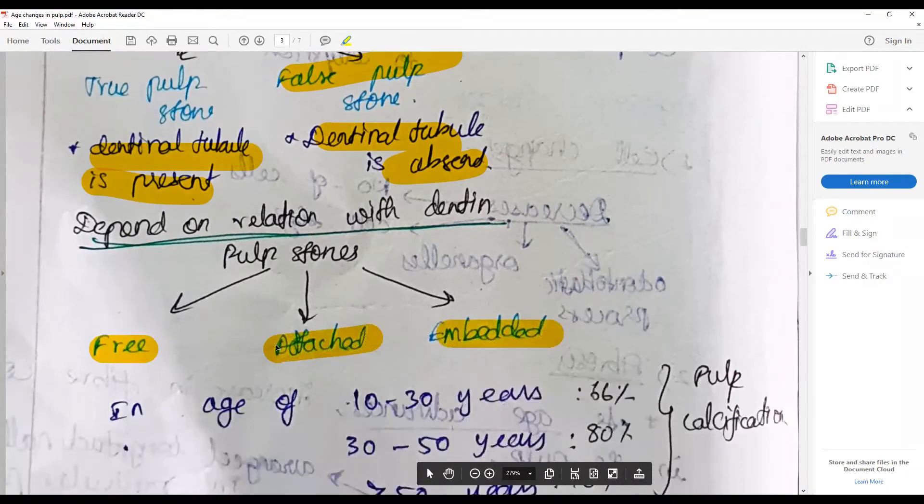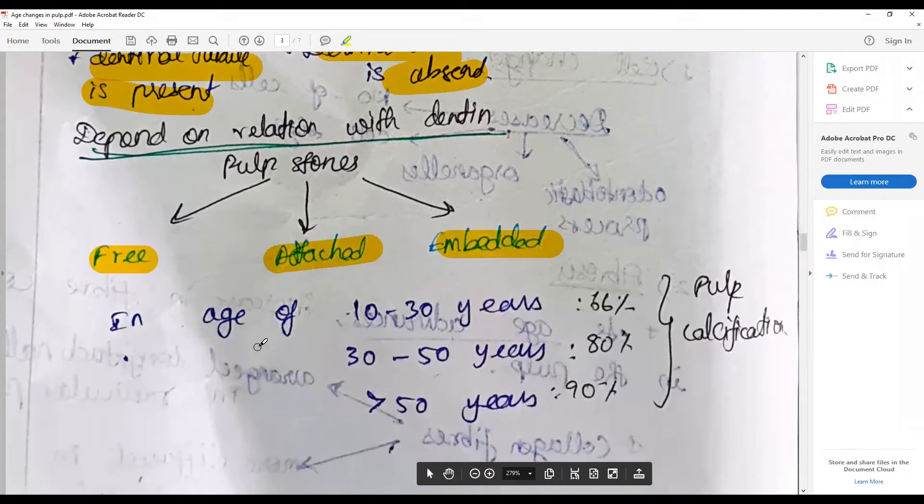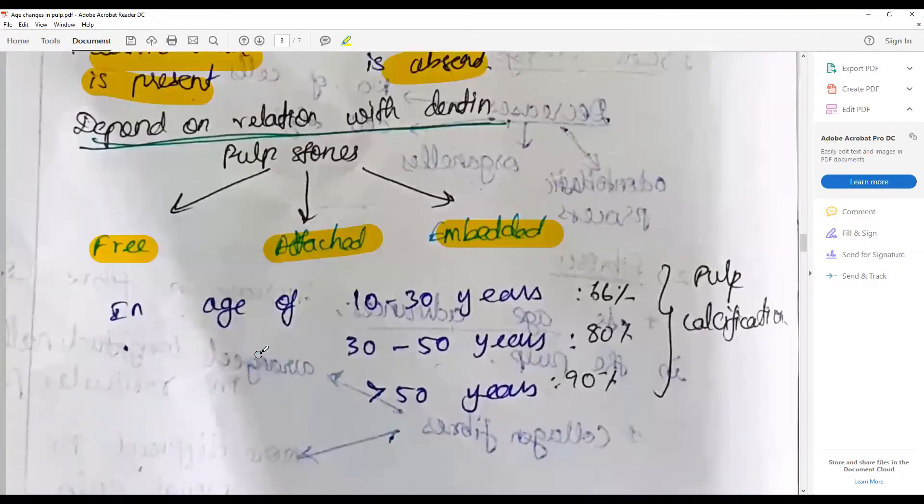Depending upon the pulp stone's relation to the dentin, it can be classified as free, attached, or embedded. Free is when the pulp stones are lying free inside the pulp. Attached: one surface of the pulp stone is attached with the surface of the dentin.